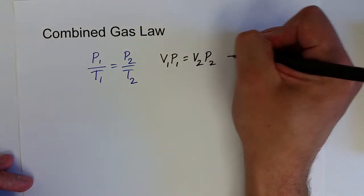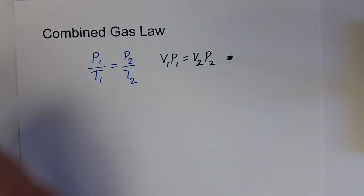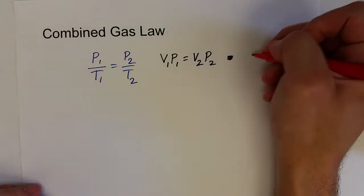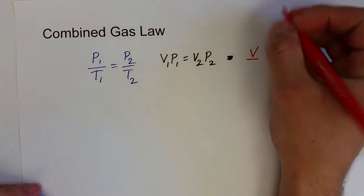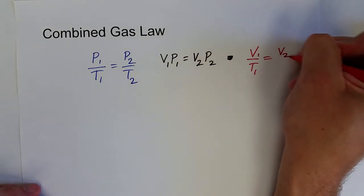And Charles' law gave us the relationship between volume and temperature. V1 over T1 equals V2 over T2.